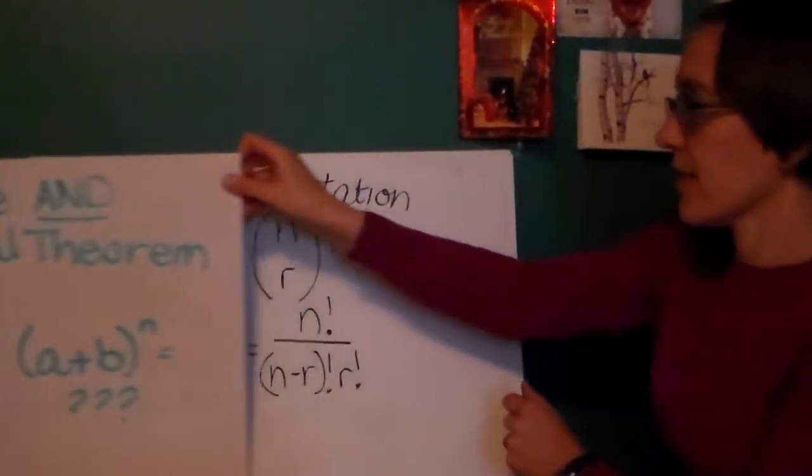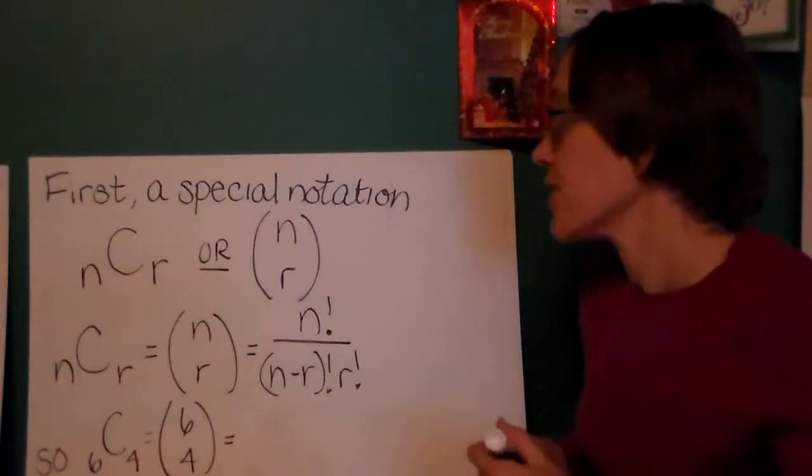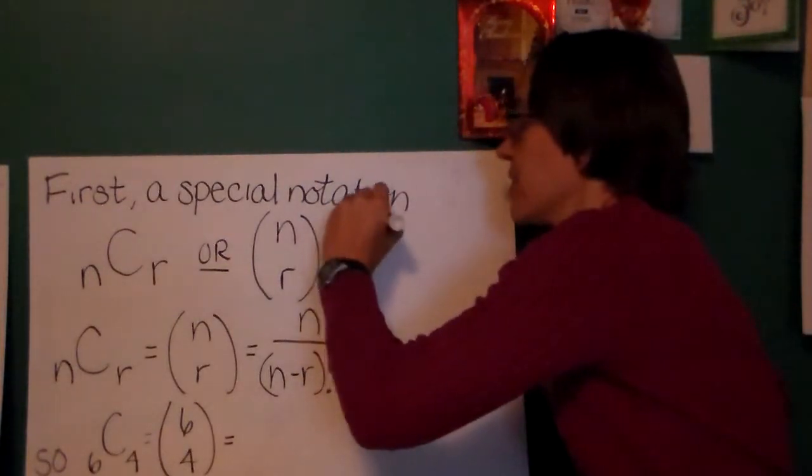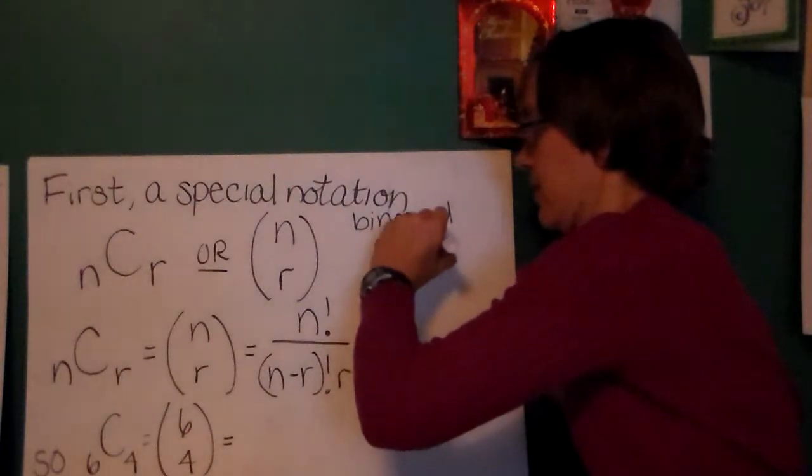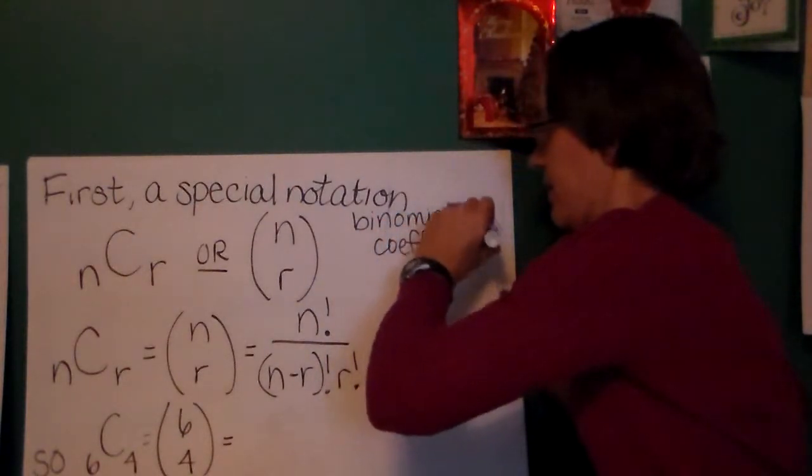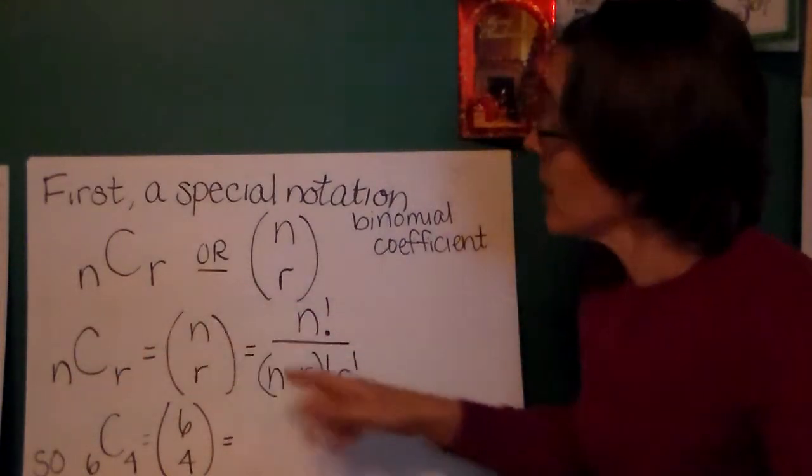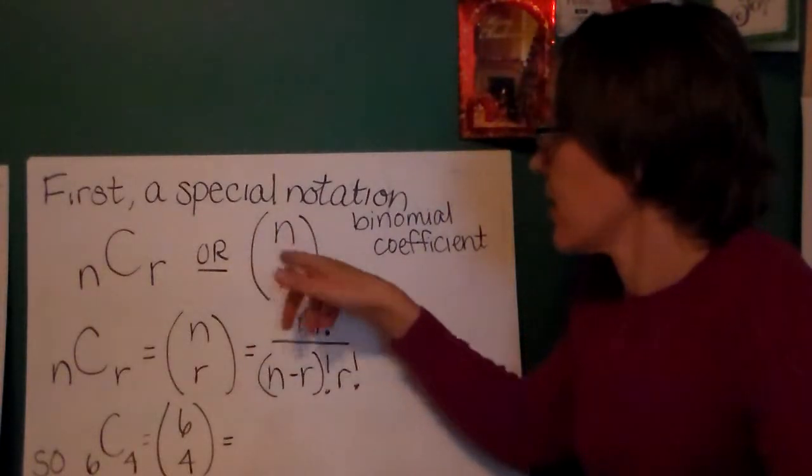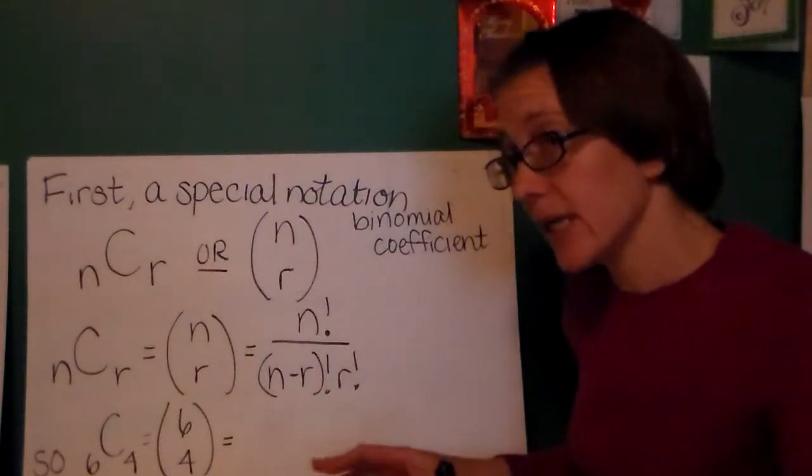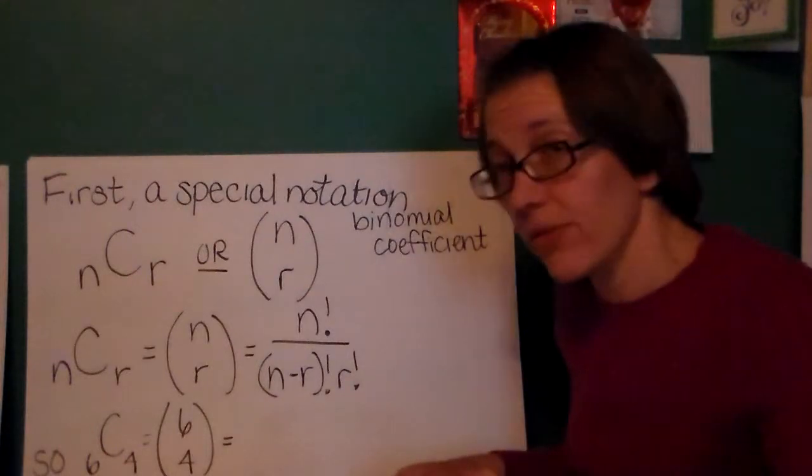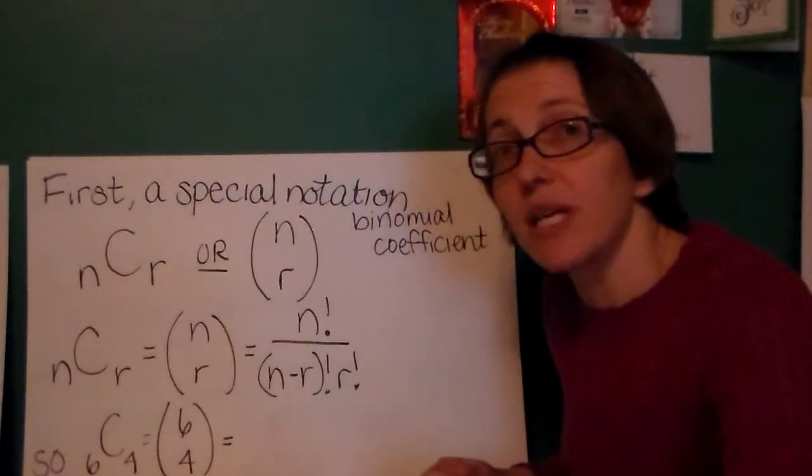So before we talk about Pascal's triangle and the binomial theorem, we're going to talk about a special notation. This notation is something called a binomial coefficient. So this notation nCr, which can also be written as giant parentheses n r, is a way of figuring out a number. In this, n is always going to be greater than or equal to r, so usually the number over here is smaller. They're also always going to be whole numbers.